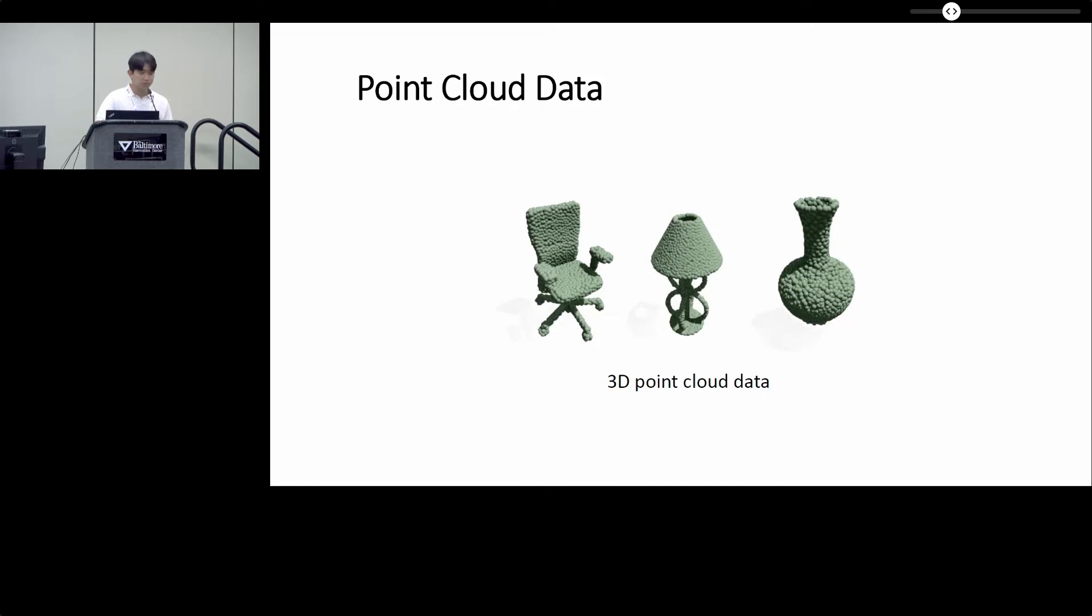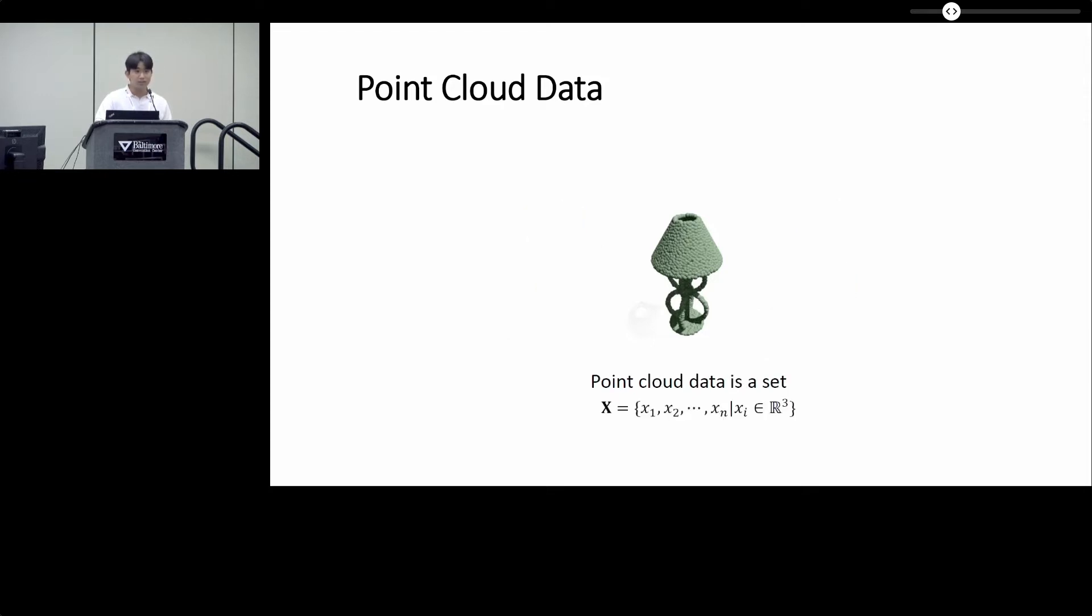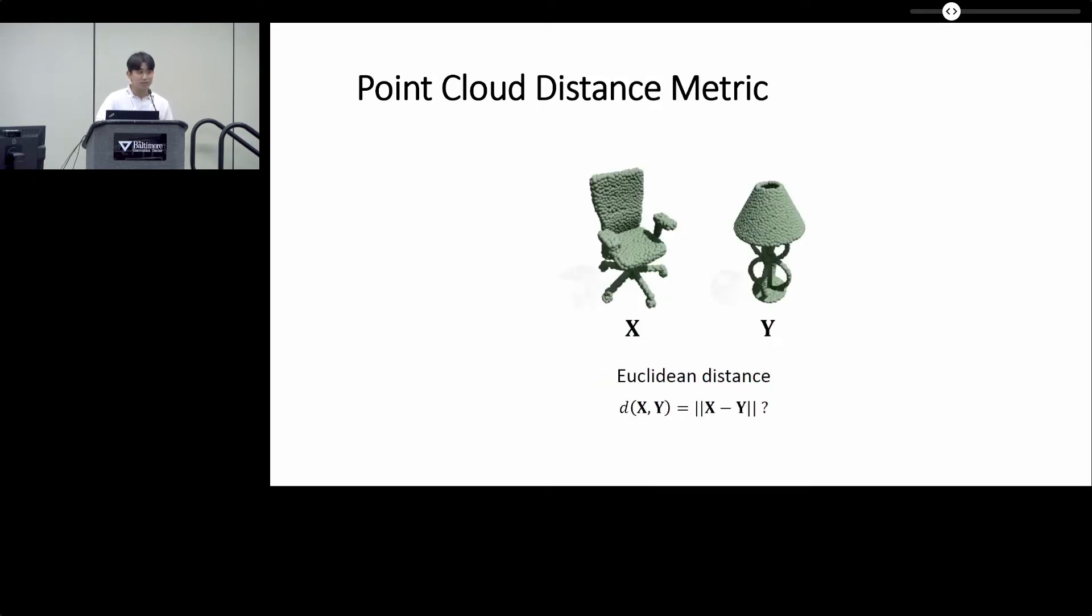Many machine learning problems involve data sets where each data point is a point cloud. For example, a point cloud data can be used to represent a 3D shape of an object. A point cloud data is a set where all that matters is whether each element is in it or not, so the ordering of its elements is irrelevant. Since point cloud data are sets, not vectors, there are several challenges when it comes to data analysis.